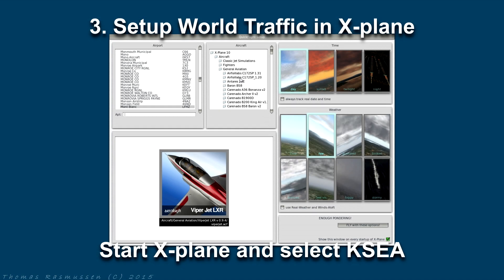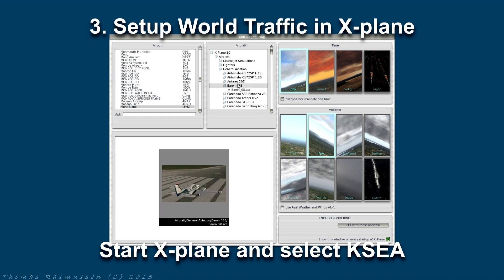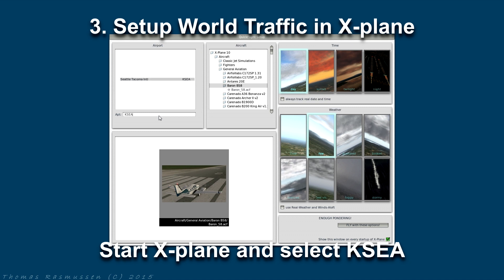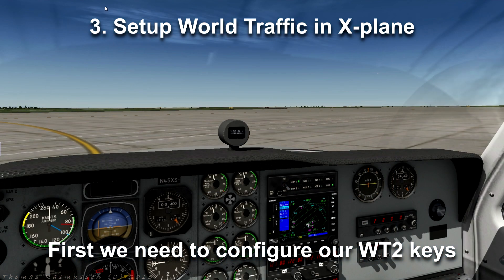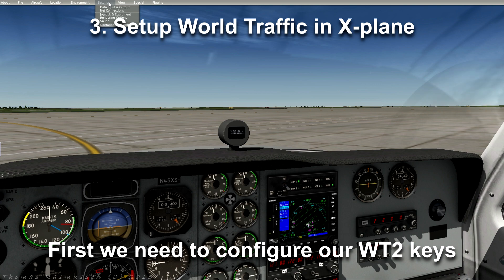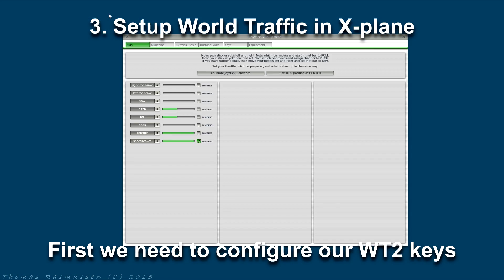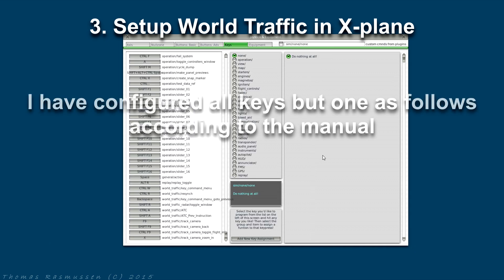Let's start up X-Plane and select Seattle Tacoma International as our airport. The first thing we need to do after World Traffic has been installed is to configure our World Traffic Keys. This is done by clicking Settings and Joystick and Equipment, then go into Keys and move to the bottom of the list.